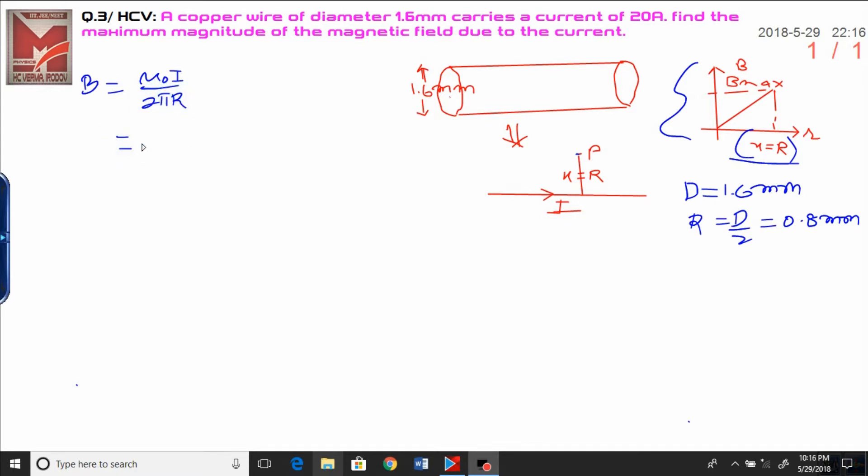Now, mu naught upon 2 pi I can write 2 into 10 raised to the power minus 7 into 10 raised to the power minus 8 into 10 raised to the power minus 6 upon radius we have calculated, that is 0.8 mm.